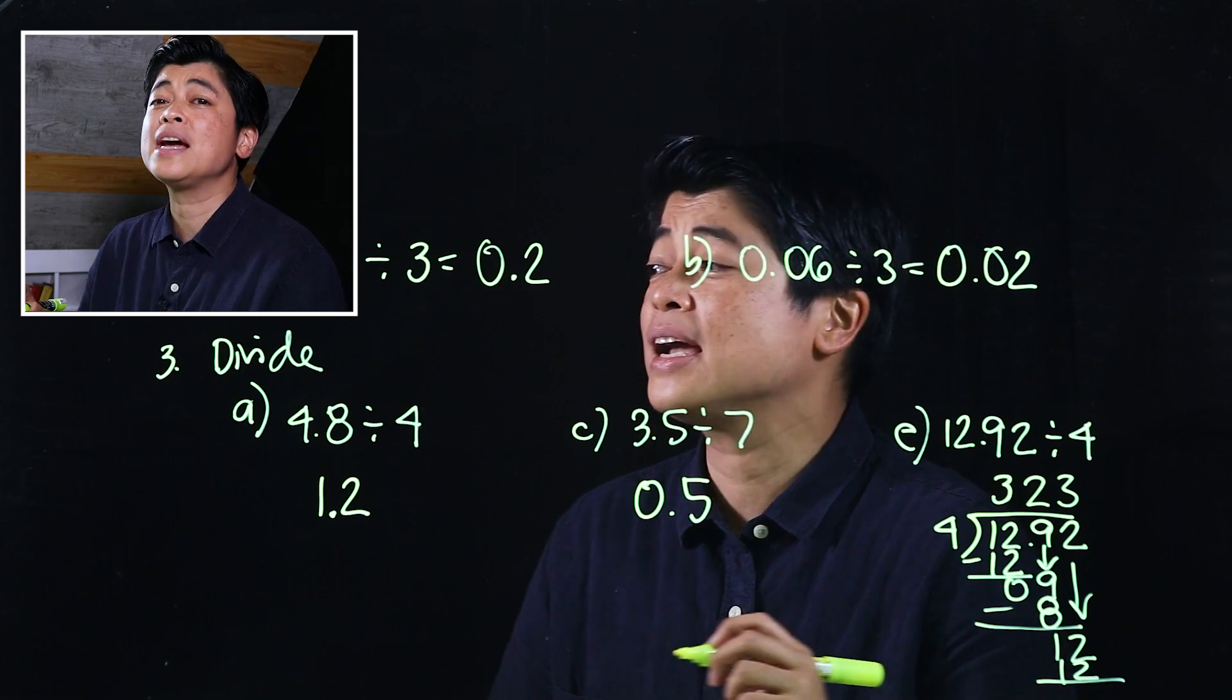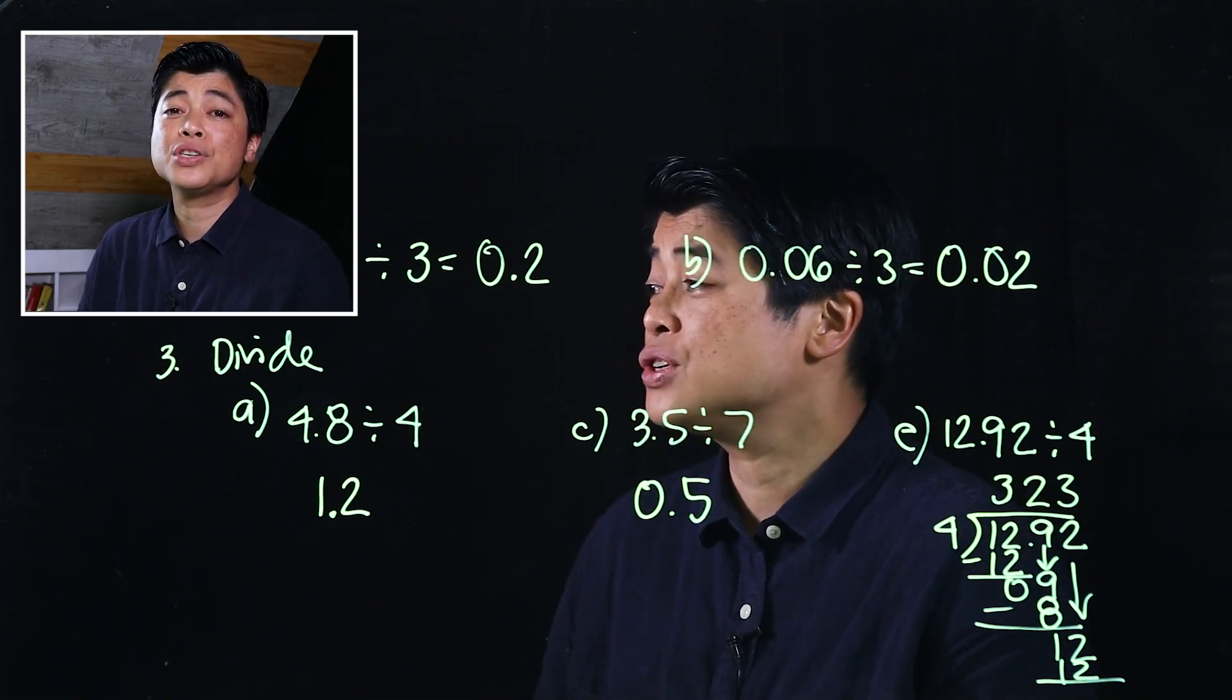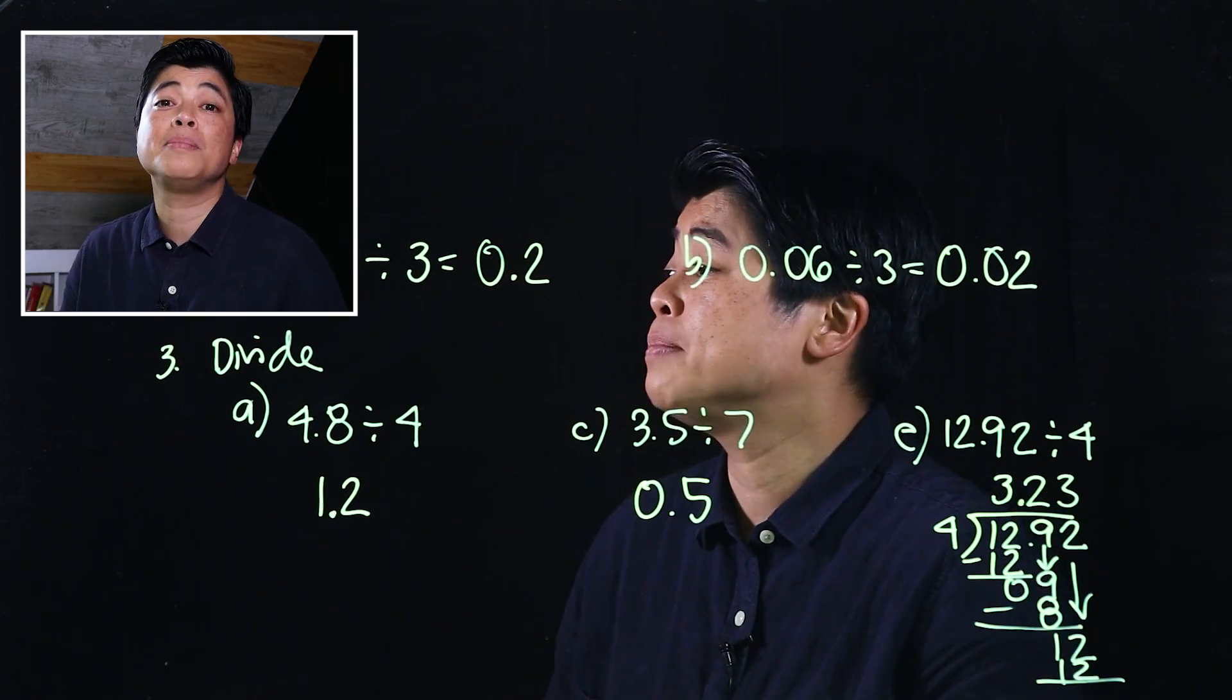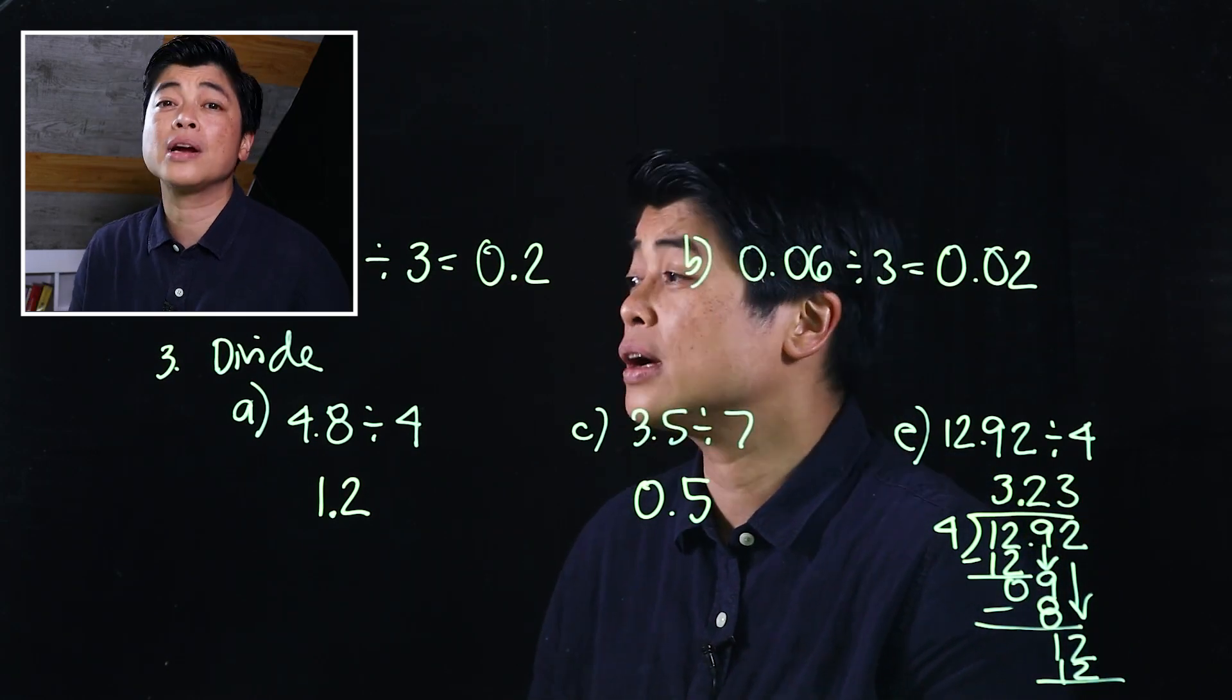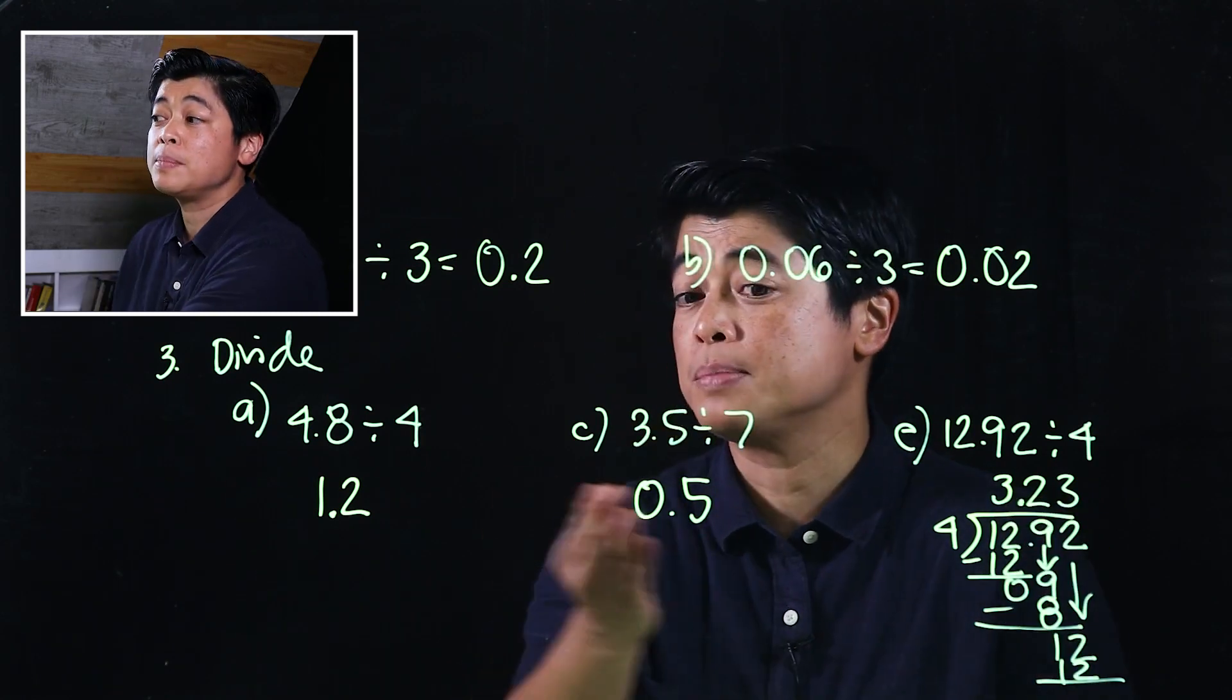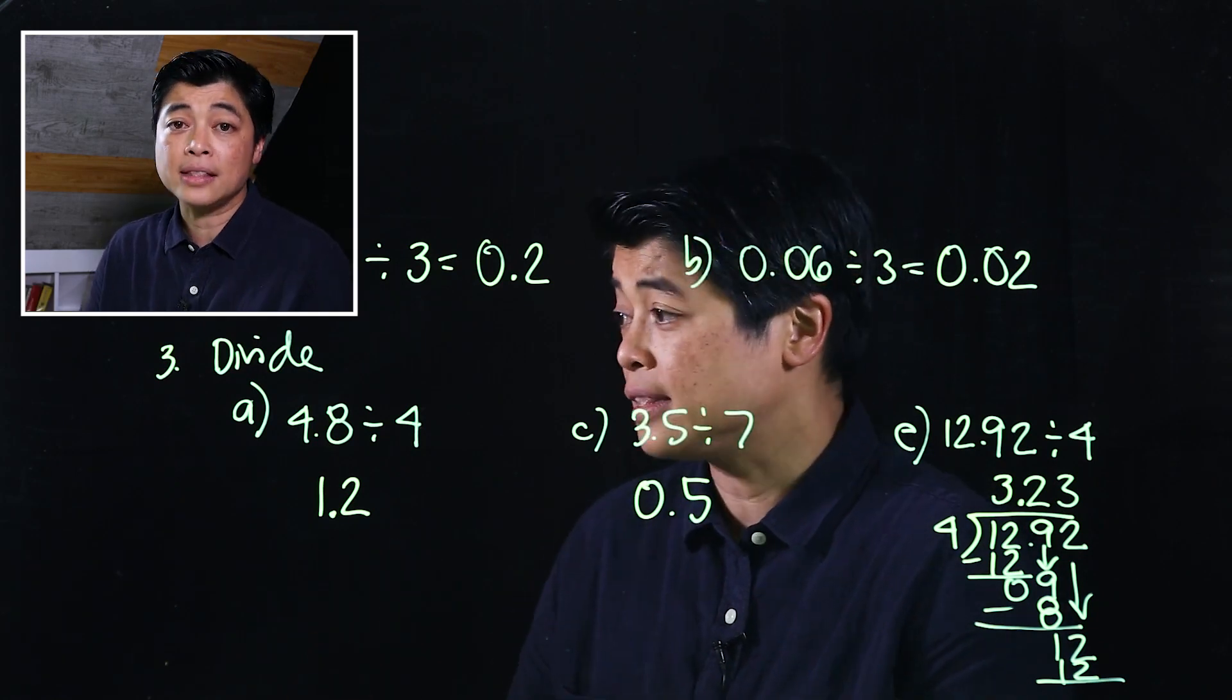Now, if you are on the careless side, what happens is usually I suggest to put the decimal right at the beginning. But if you're careful, you can put the decimal at the end because that's basically what we've been doing, putting the decimal at the end.